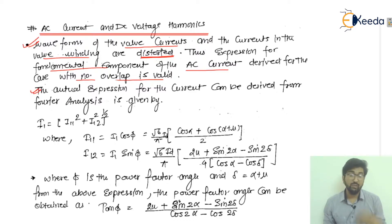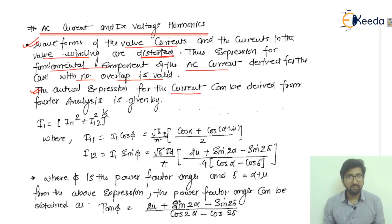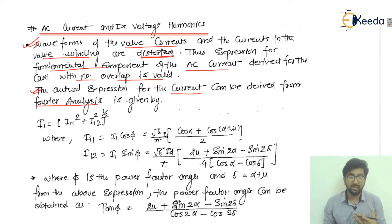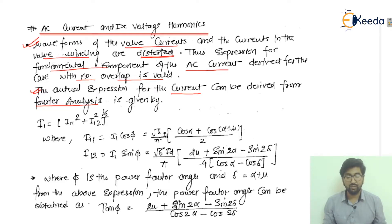When harmonics are included in the system, the actual expressions of the current can be derived from Fourier analysis. Whenever you have harmonics and extra frequency content in your system, Fourier analysis becomes the most important tool for expressing that waveform — because the unwanted frequencies appear in the form of sine and cosine components, which is exactly what Fourier analysis represents.